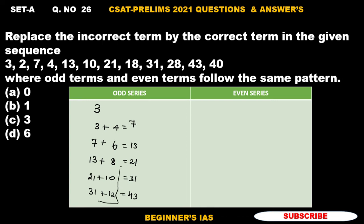odd term follows this pattern: plus 4, plus 6, plus 8, plus 10, plus 12 pattern. Same pattern should be applied for the even series also.